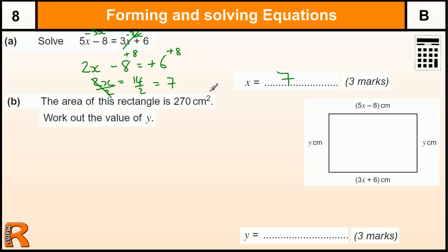That's 3 marks for that. You get 1 mark for eliminating the x or moving the 8 to the other side, then 1 mark for simplifying it and 1 mark for the answer.